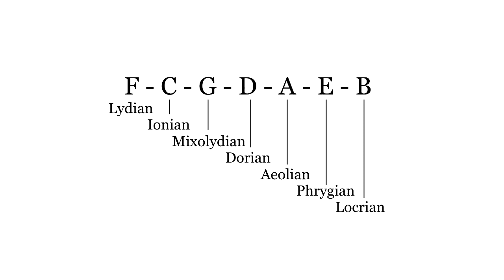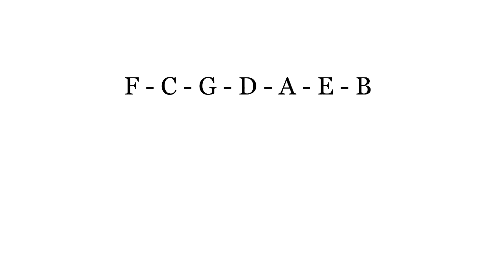Notice that in brighter modes, the tonic has more fifths stacked above it, while in darker modes, the tonic has more fourths stacked above it. This is one reason that people say fifths are inherently bright and fourths are inherently dark. This idea can be useful, though I don't think it works in all contexts. Sometimes thinking of brightness in this way can help analyze chord voicings or modulations.